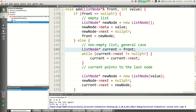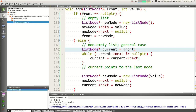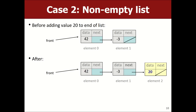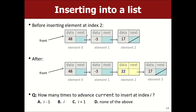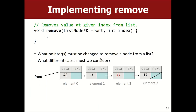This is hard stuff — you have to practice and draw a lot of pictures. I want to talk about removal for a few minutes. Let me write remove_front and remove_back. Let's think about how would I remove the front node — you just call remove_front and pass front. How do you do it?